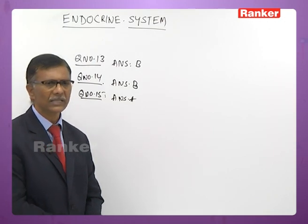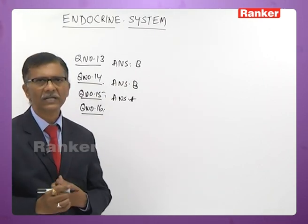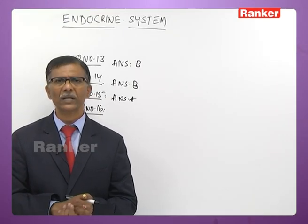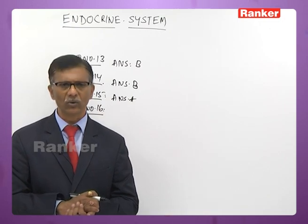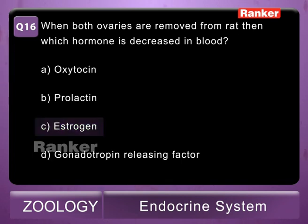Sixteenth question: when both ovaries are removed from a rat, which hormone is decreased in the blood? A - oxytocin, B - prolactin, C - estrogen, D - gonadotropin releasing factor. Ovaries are the source of secretion of estrogen and progesterone. When ovaries are removed, there will be deficiency of estrogen. The correct answer is C — estrogen.